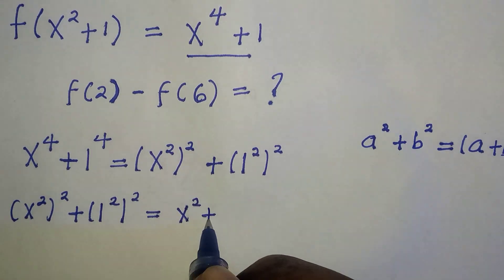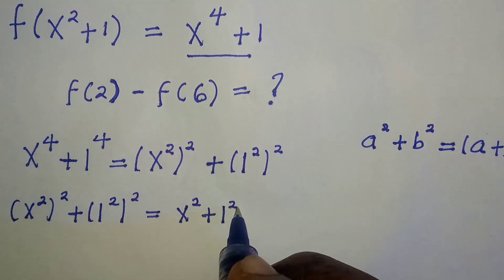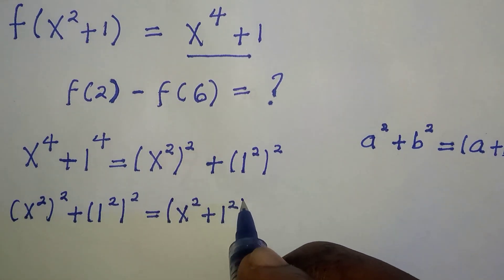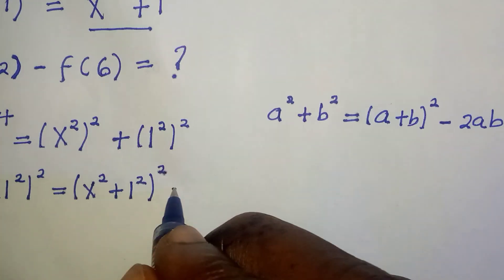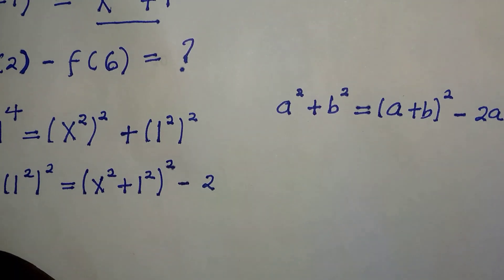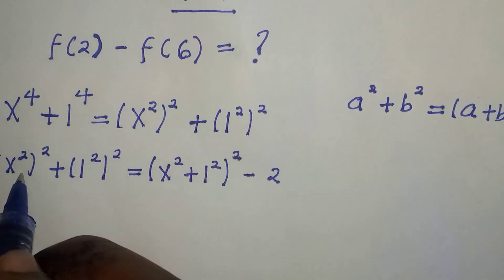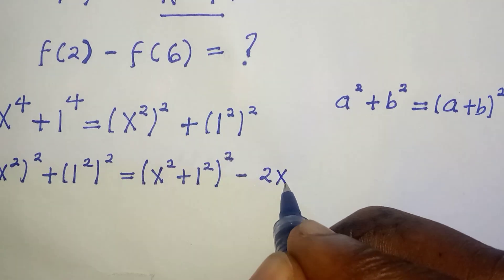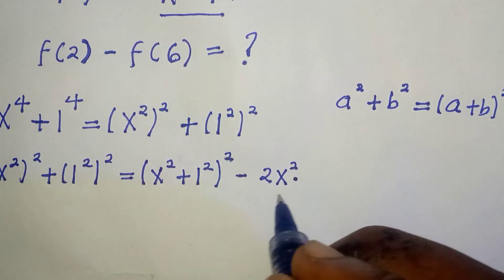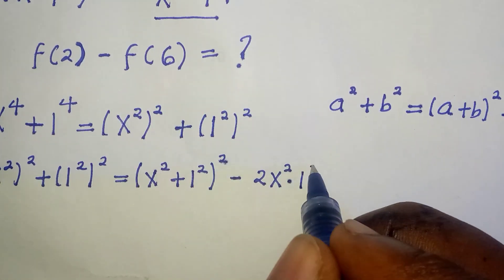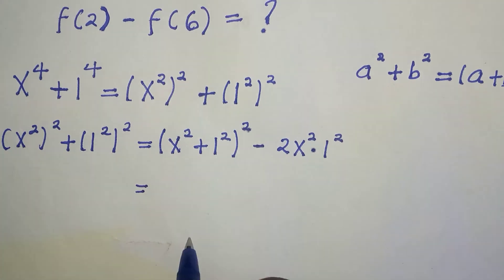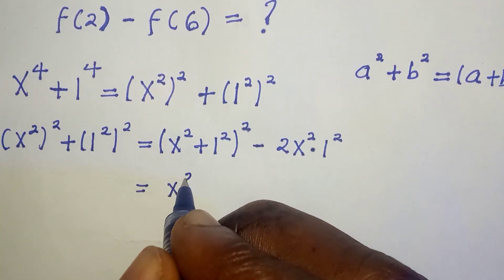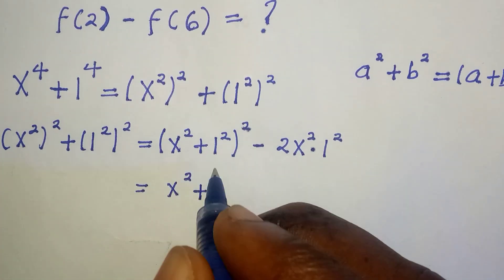That is (x² + 1²)² and here is minus 2 where a is still x² times b which is 1². Then you have this to be x raised to power 2 plus 1, and 1 squared is 1.